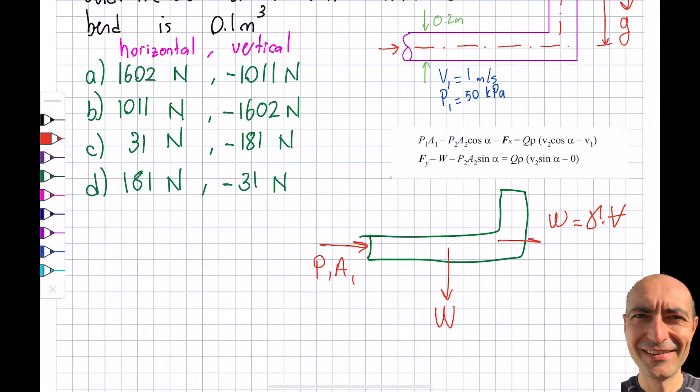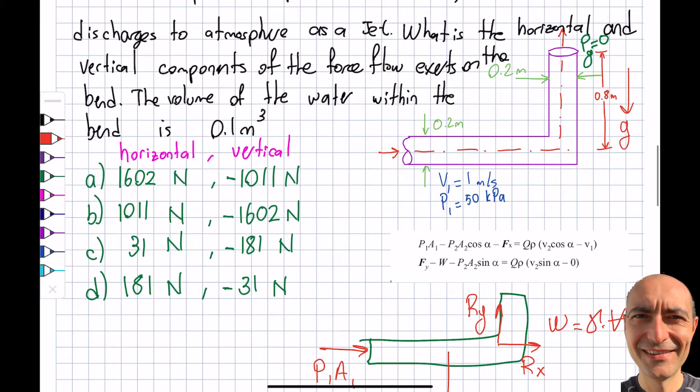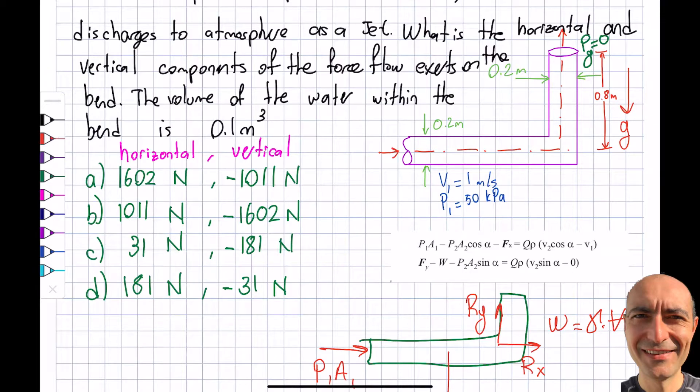I aligned this Rx and Ry arbitrarily and I get what I need. But I want to highlight this is the force that's required to hold this in place. But the question is asking what is the force flow exerts on the bend. So I have to multiply by negative 1. It's like Newton's third law, action versus reaction.